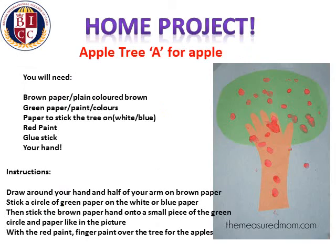Home project time now. In this activity you're going to make an apple tree because A is for apple. You will draw around your hand and wrist on paper and colour it brown. On another piece of paper draw a circle and colour it green. Make a tree like the one you can see in the picture. Once you have done that, finger paint red apples on the tree. I hope you have lots of fun making this activity. Thank you for listening.